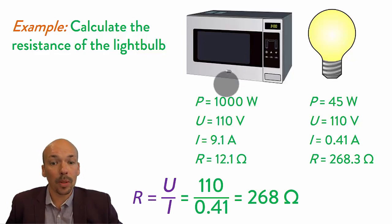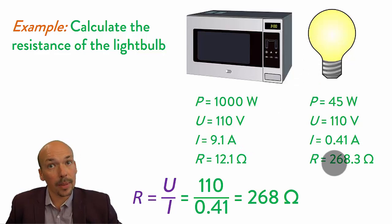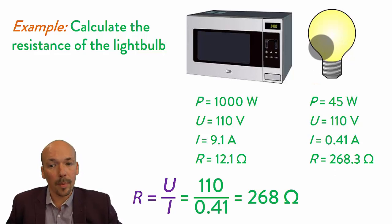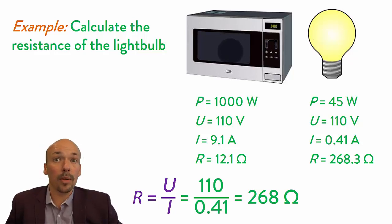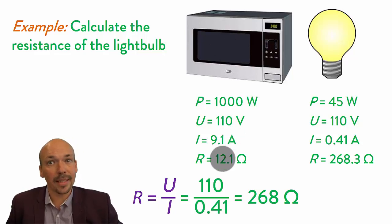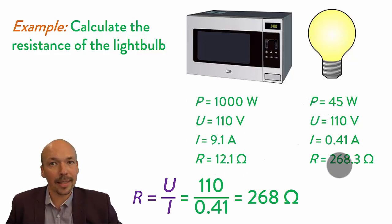If the current wants to go through the microwave, it will not be resisted that much, so it flows easier and the current is higher. The lamp has a very high resistance, so the current goes down — it cannot go as easily through the lamp. That's good, because if current flowed too easily through the lamp it would get too much energy and probably break. Conversely, if it didn't flow fast enough through the microwave, the microwave wouldn't have enough energy to work. So when power is high, resistance is low; when power is low, resistance is high.